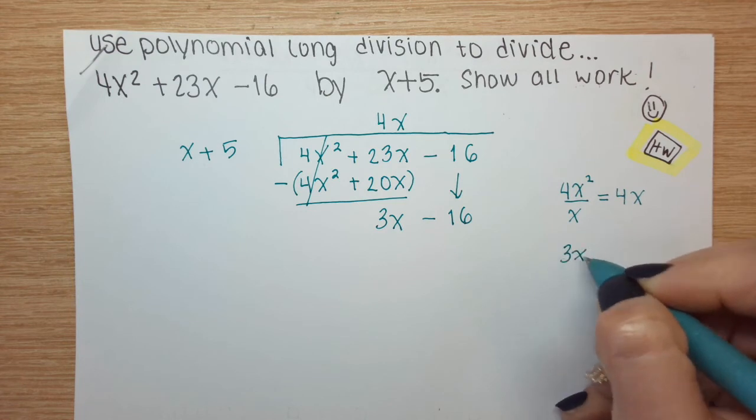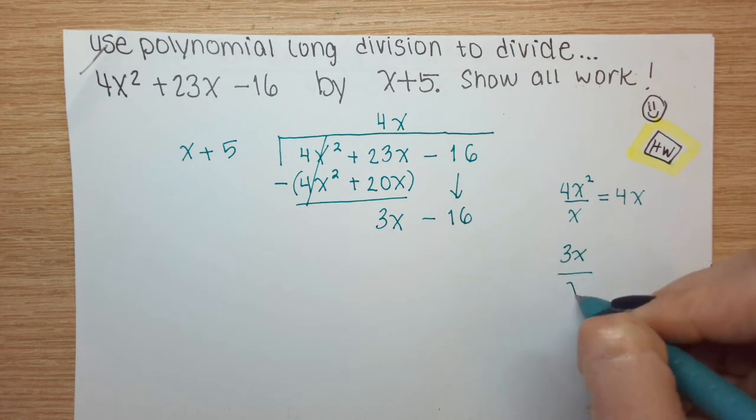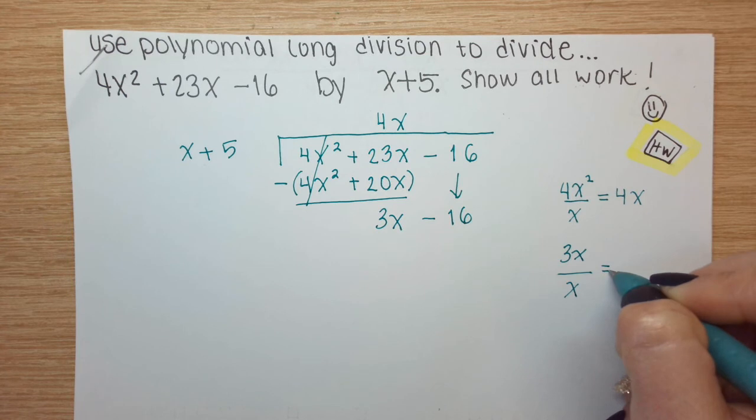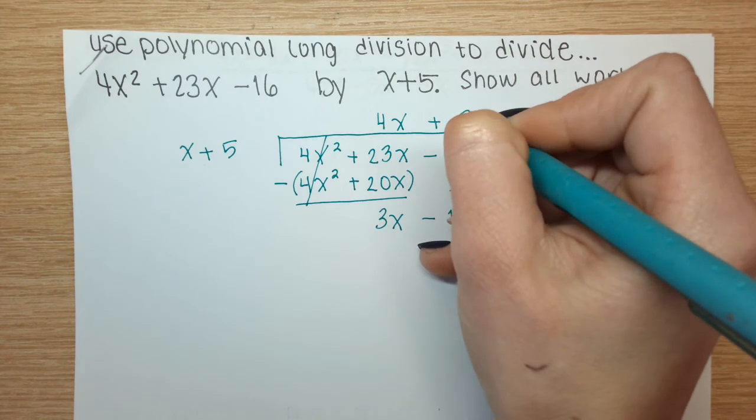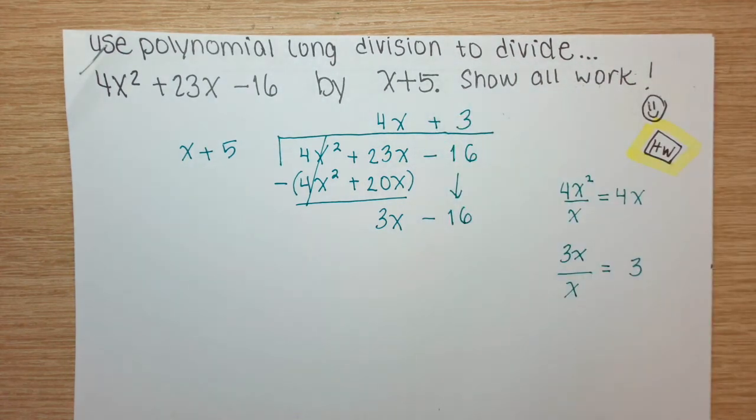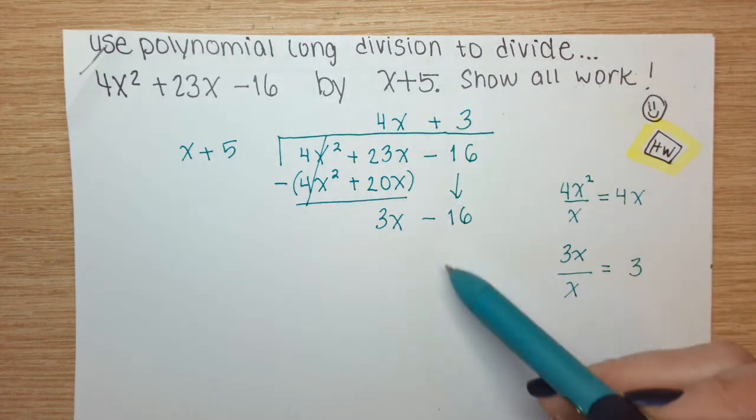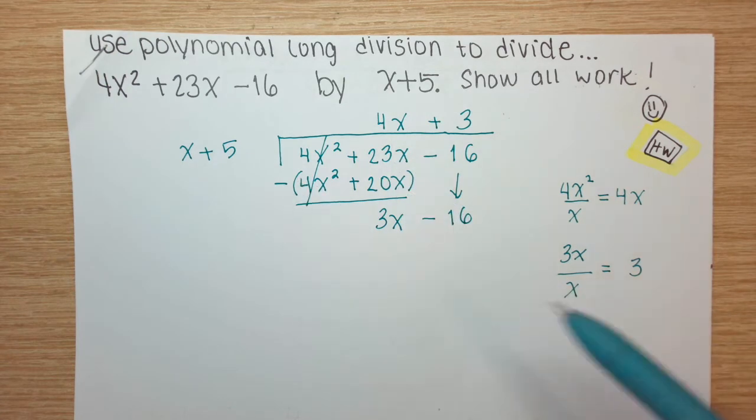Start over again. Leading term on the inside divided by leading term on the outside. We get a 3 or a plus 3. That quotient piece gets written up top. Again, check your columns. All of the expressions should match.